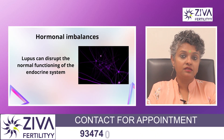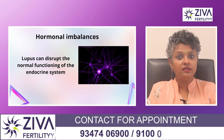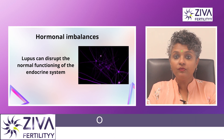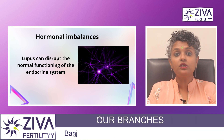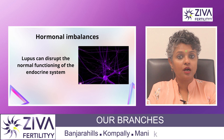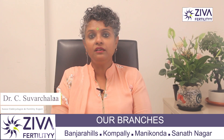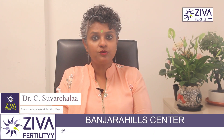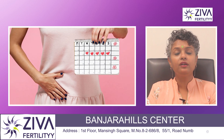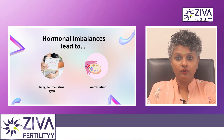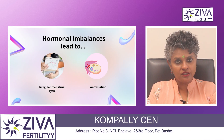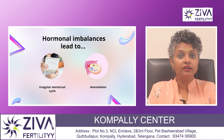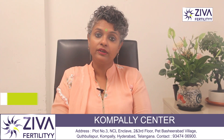Hormonal imbalances: lupus can disrupt the normal functioning of the endocrine system, which is responsible for producing hormones that regulate the menstrual cycle and ovulation. This disruption can lead to irregular menstrual cycles or anovulation — anovulation is lack of ovulation — making it very difficult to get pregnant.